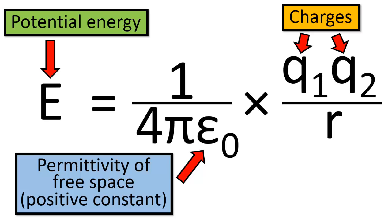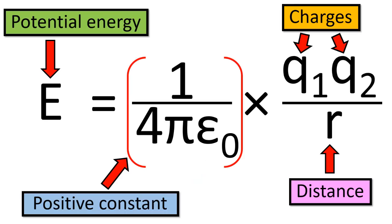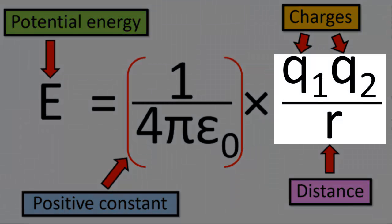Epsilon-naught is positive and does not change. Q1 and Q2 are the charges of the two particles, so they can be big or small, positive or negative. And R is the distance that separates the particles. This equation might look complicated, but it gets much simpler when we realize that the whole 1 over 4π epsilon-naught term is a positive constant, since epsilon-naught and pi are both positive constants. So that term doesn't have much of an impact on the equation. The real source of variability is the other term: Q1 Q2 over R.